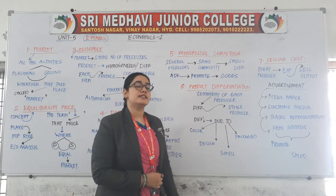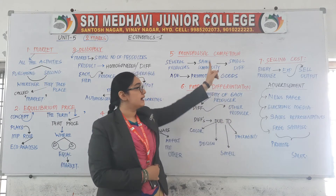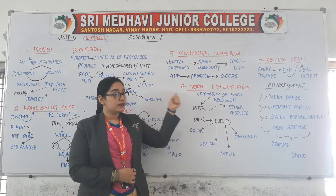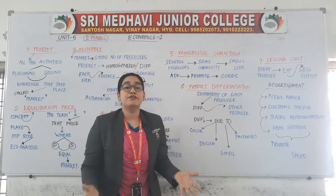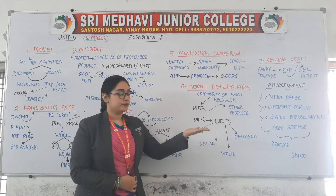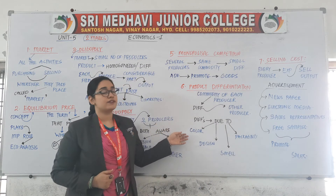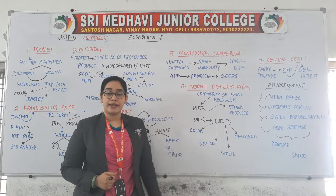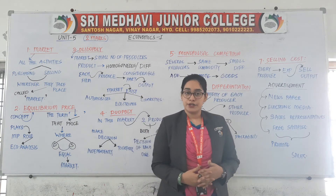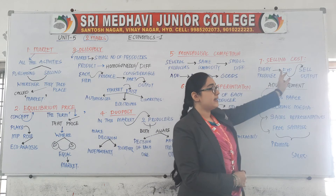The sixth concept is product differentiation. The commodity of each producer will be different from other producers. The differences may be due to color, design, smell, packaging, etc. So whatever the product they produce, it will be different from other producers based on these characteristics.